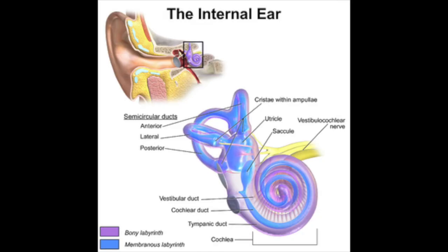The internal ear is comprised of the bony labyrinth, a system of tortuous channels winding through the bone, filled with perilymph, a fluid similar to CSF. The bony labyrinth has three regions: first, the vestibule, which is the central egg-shaped cavity housing equilibrium receptor regions; next, the semicircular canals, which also house equilibrium receptors; and finally, the cochlea, a spiral conical bony chamber that is home to the hearing receptors.